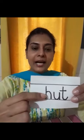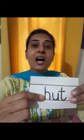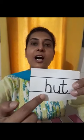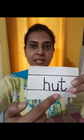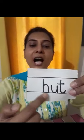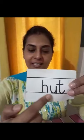Let's see the second word. It says H — the phonic sound of H is 'h'. H when added to 'ut' becomes 'hut'. Hut.